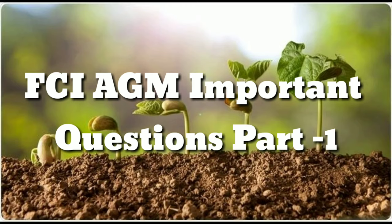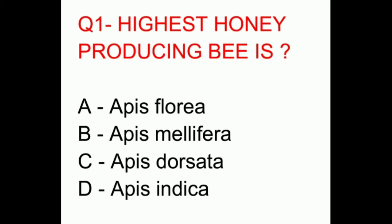Hello friends, welcome everybody. Today the video contains some important questions for FCI. Question number one: which is the highest honey producing bee? The options are Apis florea, Apis mellifera, Apis dorsata, and Apis indica. The correct answer is Apis mellifera.